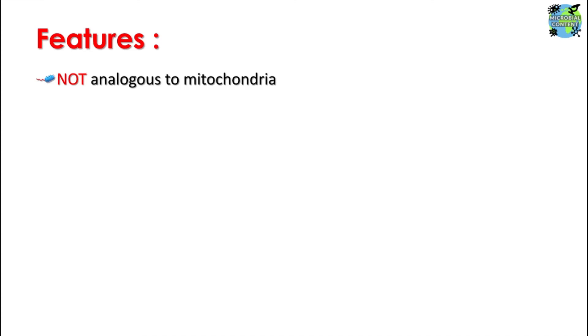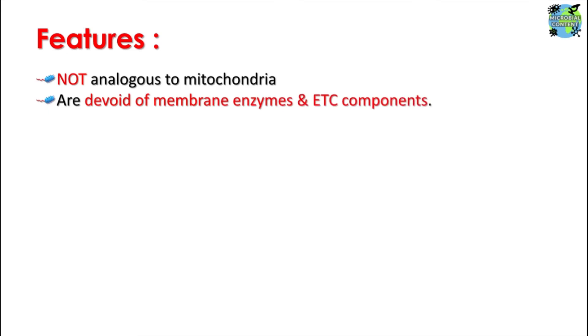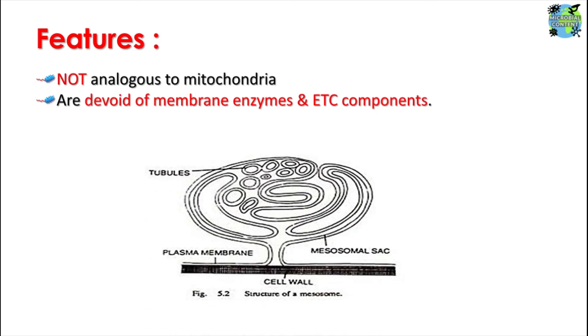These mesosomes have various features — they are not analogous to the mitochondria. Although it was initially thought they may be the site of oxidative phosphorylation, as seen in eukaryotic mitochondria, it was confirmed that they are not analogous to mitochondria. They are also devoid of membrane enzymes and electron transport chain components, which further differentiates them from mitochondria.